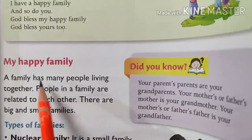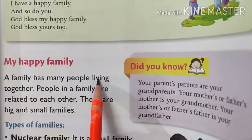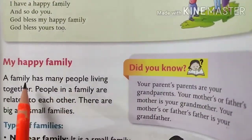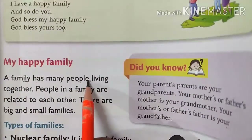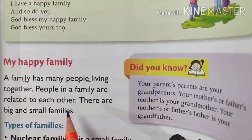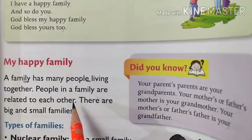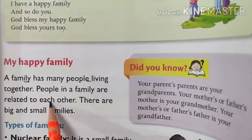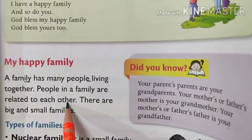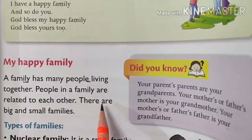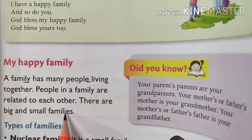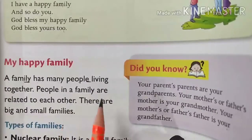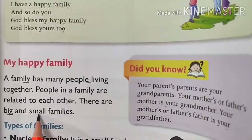A family has many people living together. Agar family hai, usmein bahut saare people ek saath rehte hain — like your family. Aapki family mein members hain na? Aap ek saath rehte ho. People in a family are related to each other — ek doosre se related hain. There are big and small families — kuch families big hoti hain, kuch small hoti hain.